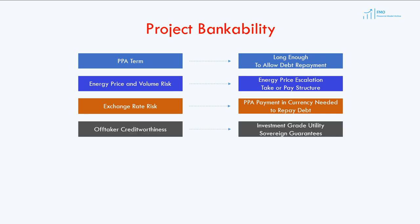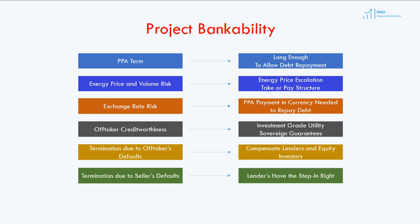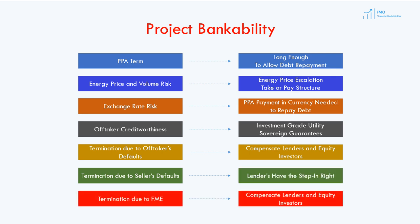The off-taker has to be creditworthy. The off-taker is typically an investment-grade utility, or sovereign guarantees are given by the state to the energy seller in case the off-taker defaults. Finally, the post-termination obligations we have just covered also have to be included in the PPA. The bankability discussion so far is not exhaustive — bankability varies from project to project and is subject to the interpretations and analysis by project lenders and equity investors.